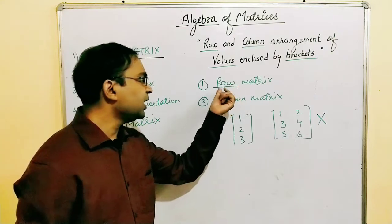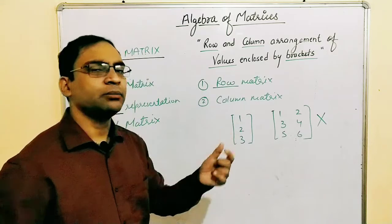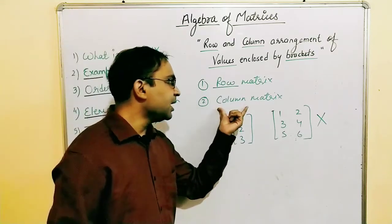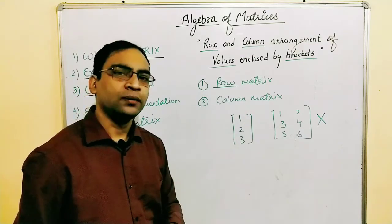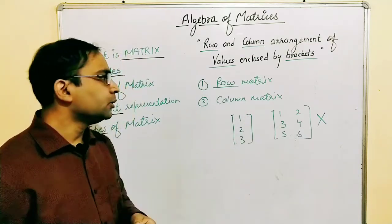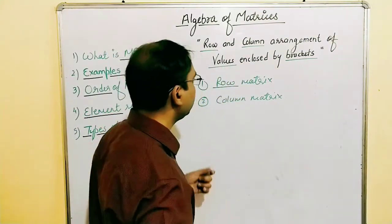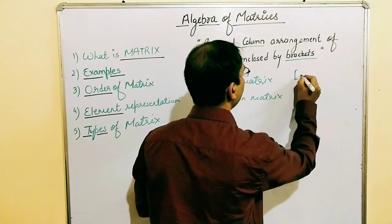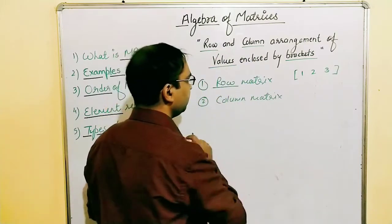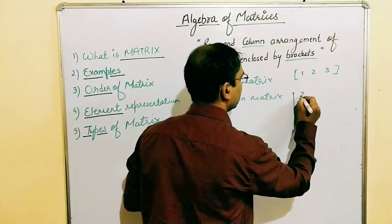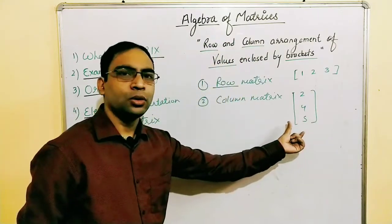To be very precise: the row matrix is a matrix with only one row and any number of columns. The column matrix is a matrix with only one column and any number of rows. For example, [1, 2, 3] is a row matrix, and a vertical arrangement of 2, 4, 5 is a column matrix.